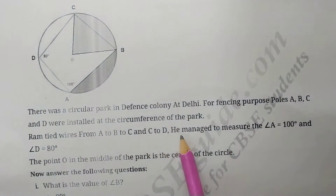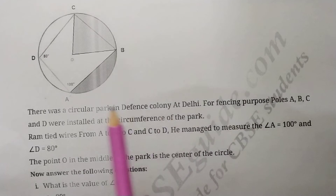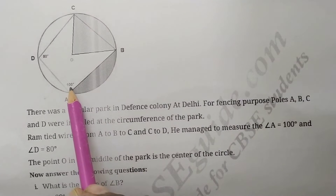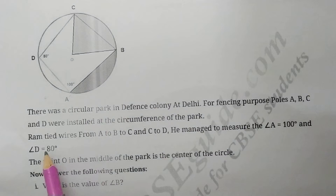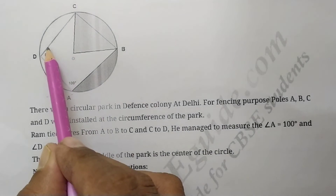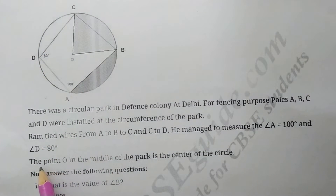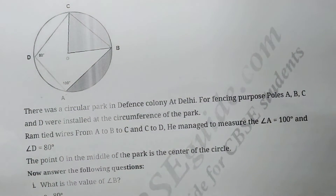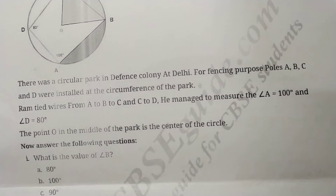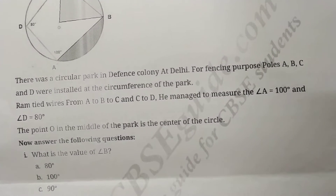Ram measured angle A as 100 degrees and angle D as 80 degrees. The point O is the center of the circular park. Now let's see what questions are based on this case study.